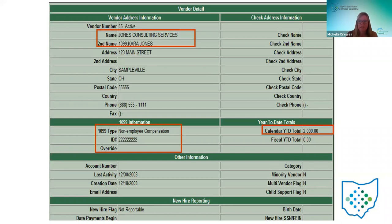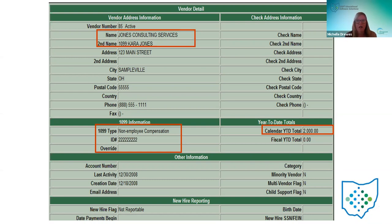The calendar year-to-date amount is what gets pulled in, and this is a modifiable field. So if you have a district call and say their year-to-date amount is $2,000 but they should really be reporting $1,600 to the IRS, they can go into the vendor and modify that year-to-date amount and input $1,600. That's the amount that's going to get pulled in to the F 1099 report.